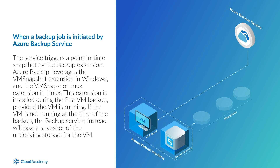If the VM is not running at the time of the backup, the backup service will instead take a snapshot of the underlying storage for the VM. During the snapshot process on a VM, the backup service coordinates with the Volume Shadow Copy Service, or VSS, to ensure a consistent snapshot is taken of the virtual machine's disks.